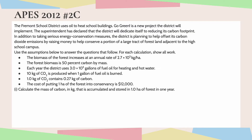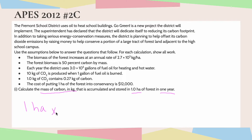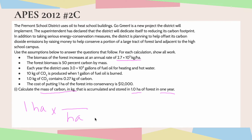Number one says calculate the mass of carbon in kilograms that is accumulated and stored in one hectare of forest in one year. So I'm going to start with my given, which is one hectare. This is a dimensional analysis problem, or a unit conversion problem, so I'm going to be paying extra special attention to my units. The biomass of the forest increases at an annual rate of 2.7 times 10 to the fifth kilograms per hectare. So I'm going to put my hectare in the bottom and 2.7 times 10 to the fifth kilograms on top.